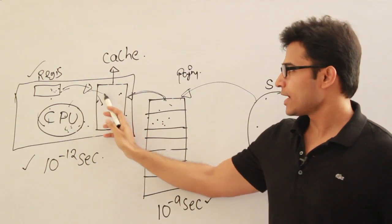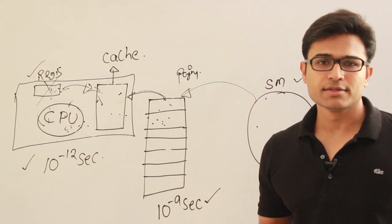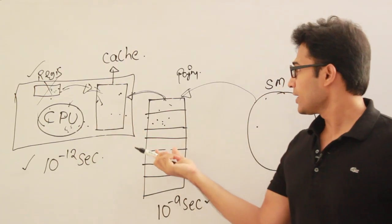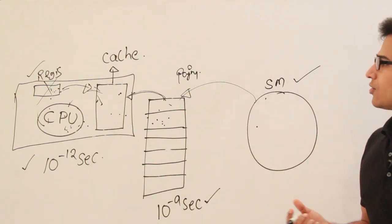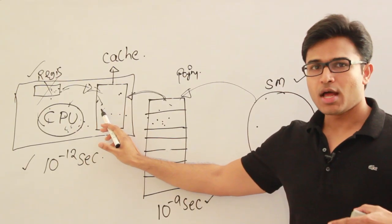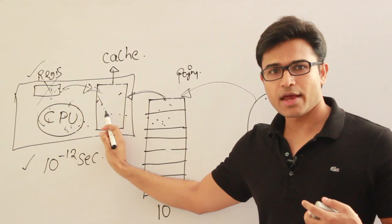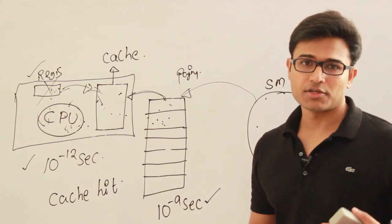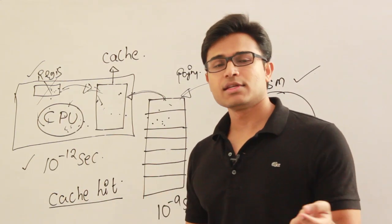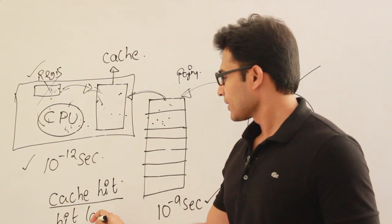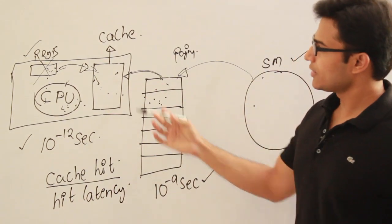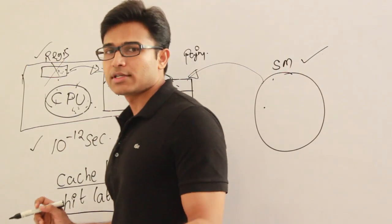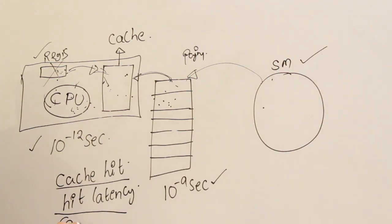If the required element is present directly in the cache — let's set aside registers because the time taken to access them is negligible — let's say we have three levels: cache, main memory, and secondary memory. Whenever we look into the cache and find that whatever we require is present there, that is called a cache hit. Cache hit is when the required element is present in the cache. The time taken to find out whether it is present in the cache or not is called hit latency. In case the required element — whether instruction or data — is not present in the cache, it is called a cache miss.